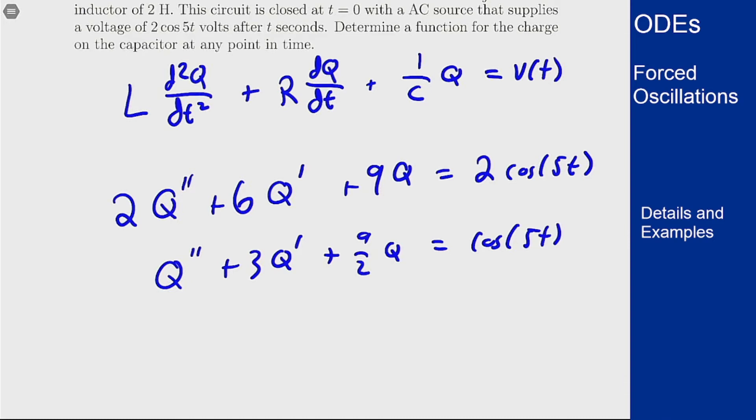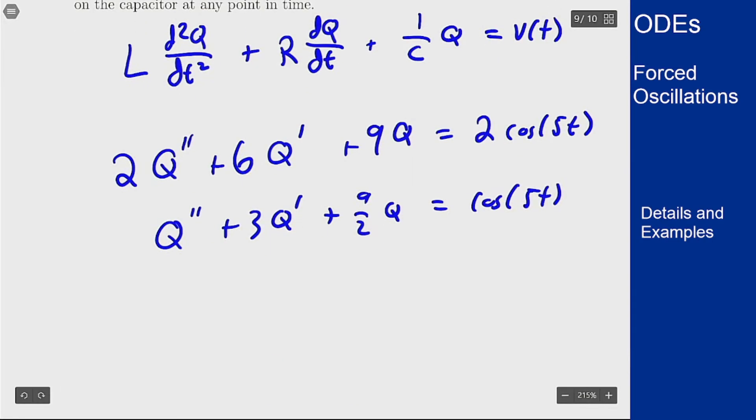What are the initial conditions? Well, we know the circuit is closed at t equals 0. So at that starting point there is no voltage on the capacitor and there's no current through the circuit. This means our initial conditions are that q(0) is 0 and q prime of 0 is also 0. Now we can try to solve this problem.